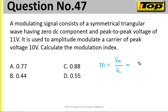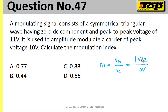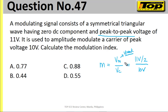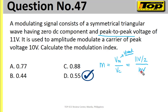Our VM is 11 volts over 2, divided by 10 volts. Why did it become 11 volts divided by 2? Because the problem states peak-to-peak voltage, and our VM is peak voltage only. So we divide the peak-to-peak by 2, giving us 5.5, divided by the carrier. That will become letter D, 0.55 for number 47.